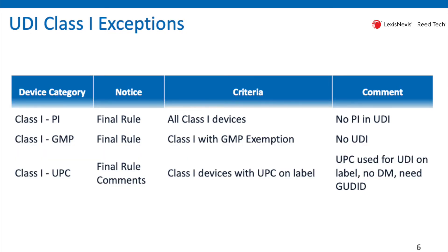Since the Class 1 compliance date has not occurred yet — looking to next year — I thought I'd include a couple of very specific notes on Class 1 products. Those manufacturers of Class 1 medical devices: if you find that your Class 1 product has a good manufacturing practice exemption — a GMP exemption, not referring to a 510 exception — roughly 15–20% have a GMP exemption. If you find that is true, you have no UDI requirements.